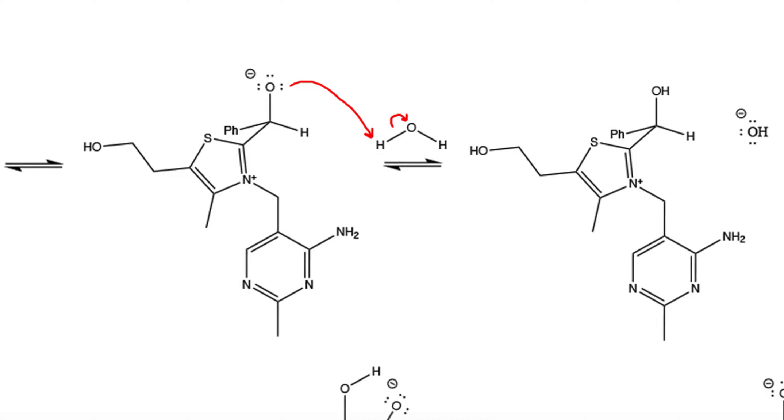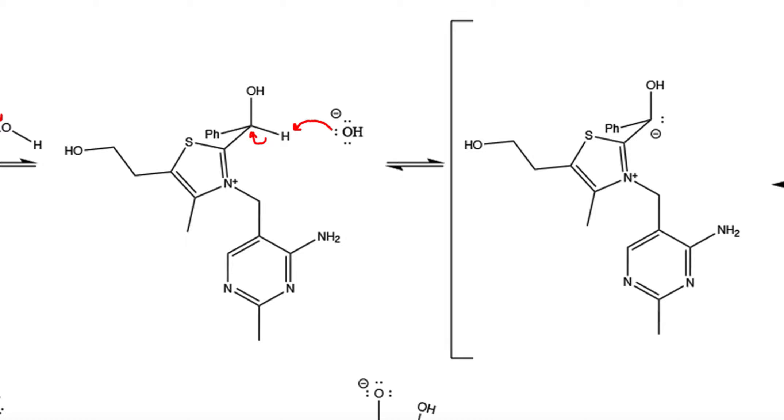the molecule becomes more susceptible to deprotonation from hydroxide. So hydroxide grabs this proton, we break the bond, and the electrons get put onto this carbon, resulting in the formation of a carbanion.